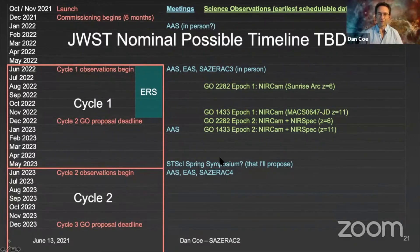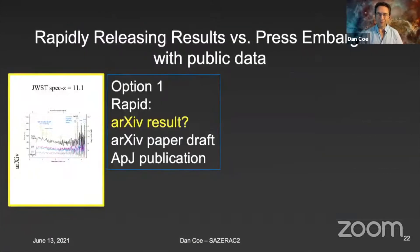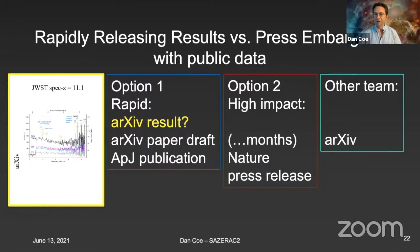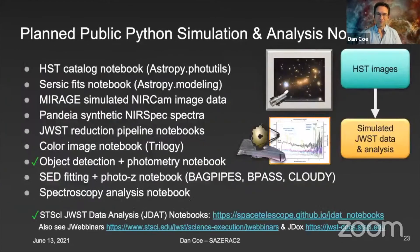I hope to be attending SAZERAC 3 and 4 coming up. I want to figure out how to rapidly release results with public data. There is an issue with press releases in that you might want to wait a little bit longer. But with public data, other teams could come in and also analyze that from the archive. So I'm trying to figure out the best way to put out exciting results without going against those press release embargoes.